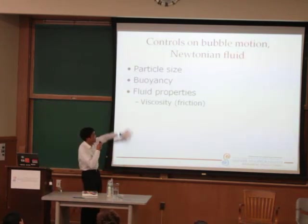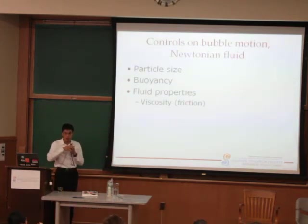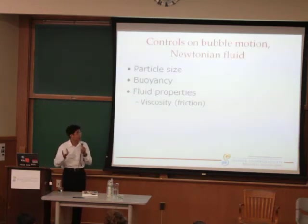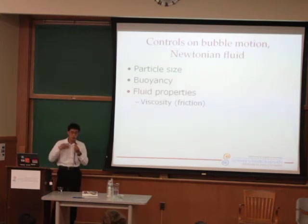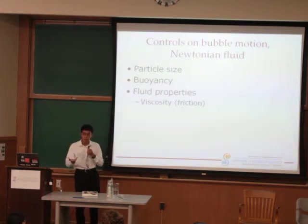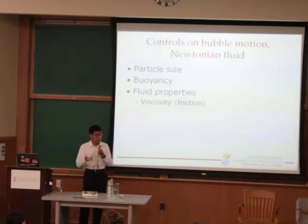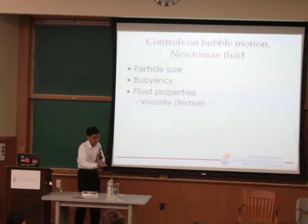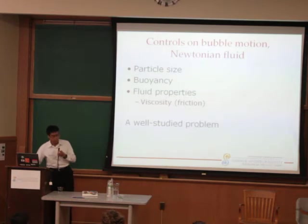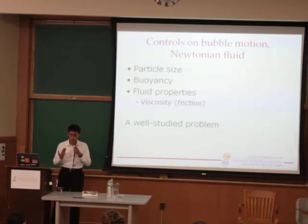Entering into these two forces, we can pick out a few parameters that control motion: namely particle size, buoyancy (which is set by mass and density difference), and fluid properties. Here we're going to focus on viscosity, which is friction. For example, if you try to pour a fluid, the rate at which it moves is set by its internal viscosity. Pour a cup of water and it falls out pretty quickly, but if you take honey or molasses and try to pour it out, it's going to take a little while — and that's set by the viscosity of the fluid. This is a very well studied problem.